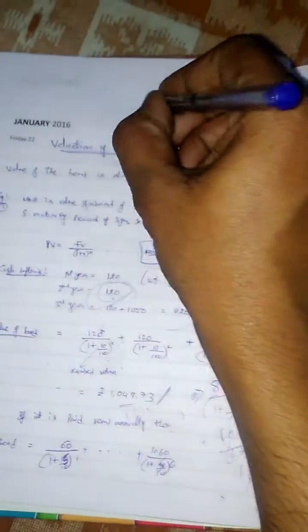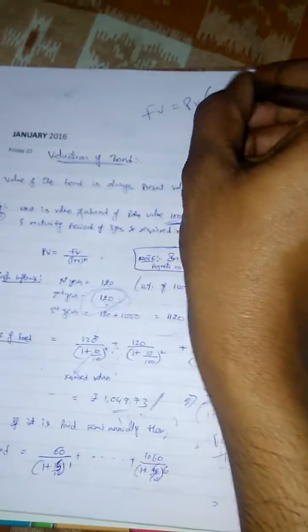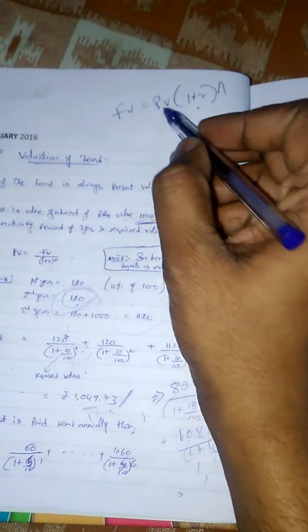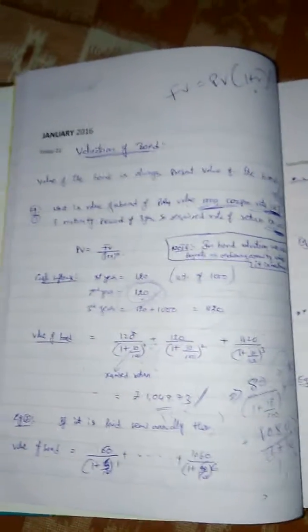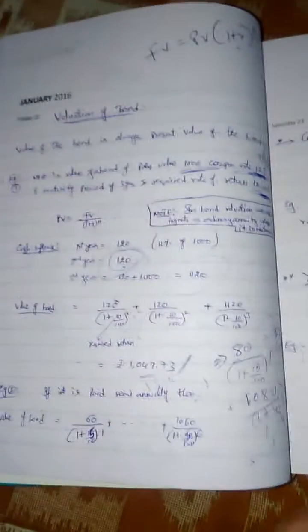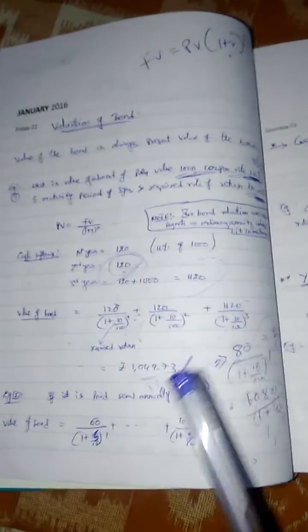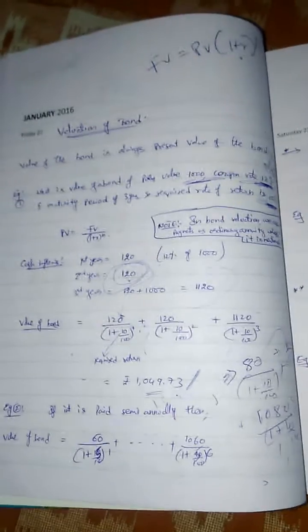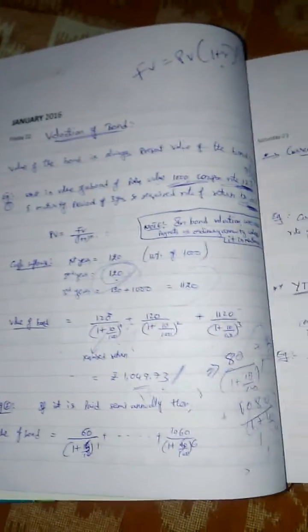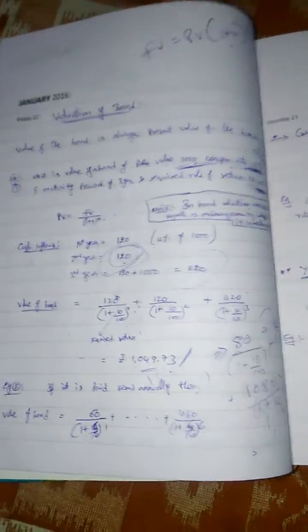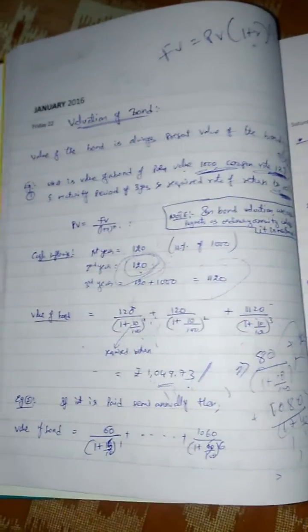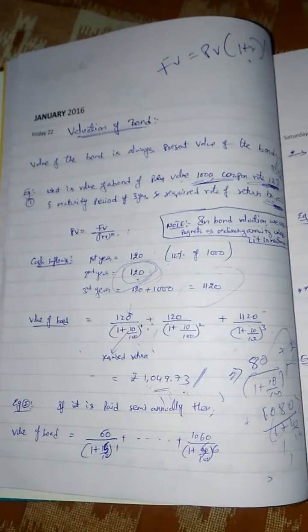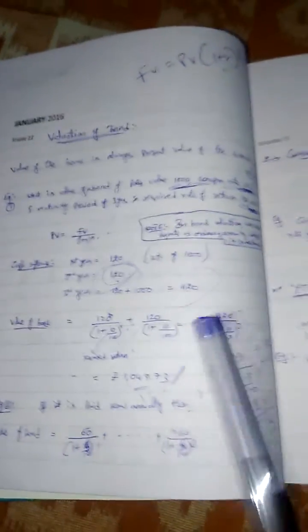The formula is: future value equals present value into (1 + r) to the power n, which means present value equals future value divided by (1 + r) to the power n. Whenever a question is asked on finding the value of a bond, we find the present value of all future inflows. Unless specially mentioned, in bond valuation we assume all future cash inflows accrue by way of ordinary annuity — that is, all cash inflows arrive at the end of the period. Let's take an example.